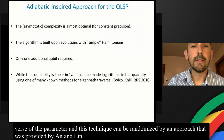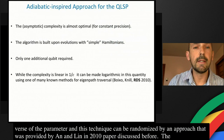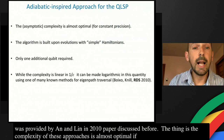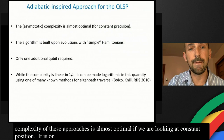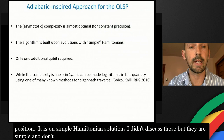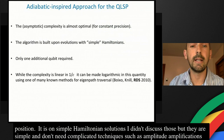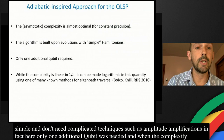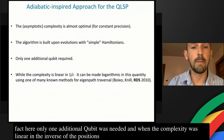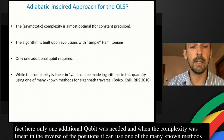The asymptotic complexity of this adiabatic-inspired approach is almost optimal at constant precision. The algorithm is built upon simple Hamiltonian evolutions and doesn't need complicated techniques like variable time amplitude amplification requiring many ancillary qubits. In fact, only one additional ancillary qubit was needed. This technique can be derandomized by a purely adiabatic approach provided by An and Lin in 2018.